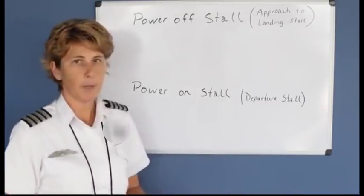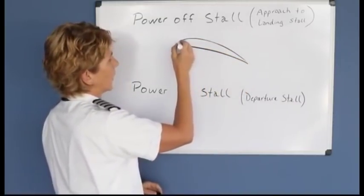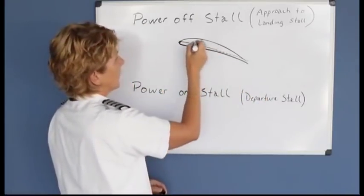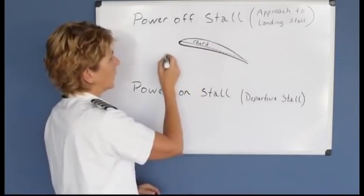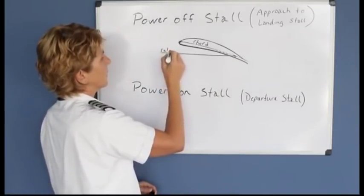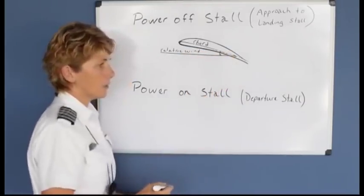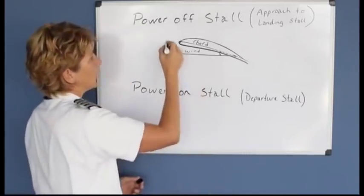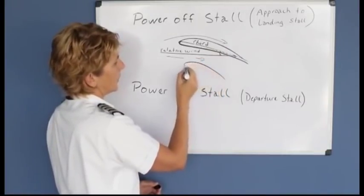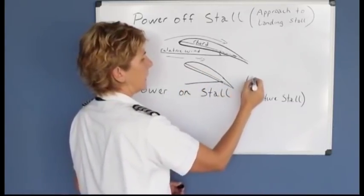First let's look at why an airplane stalls. The cord line is an imaginary line from the leading edge to the trailing edge of the wing. The relative wind is the wind opposite your flight path. The angle that the cord line makes with the relative wind is called your angle of attack. If you pitch the airplane up too high and increase that angle of attack beyond about 18 to 20 degrees,